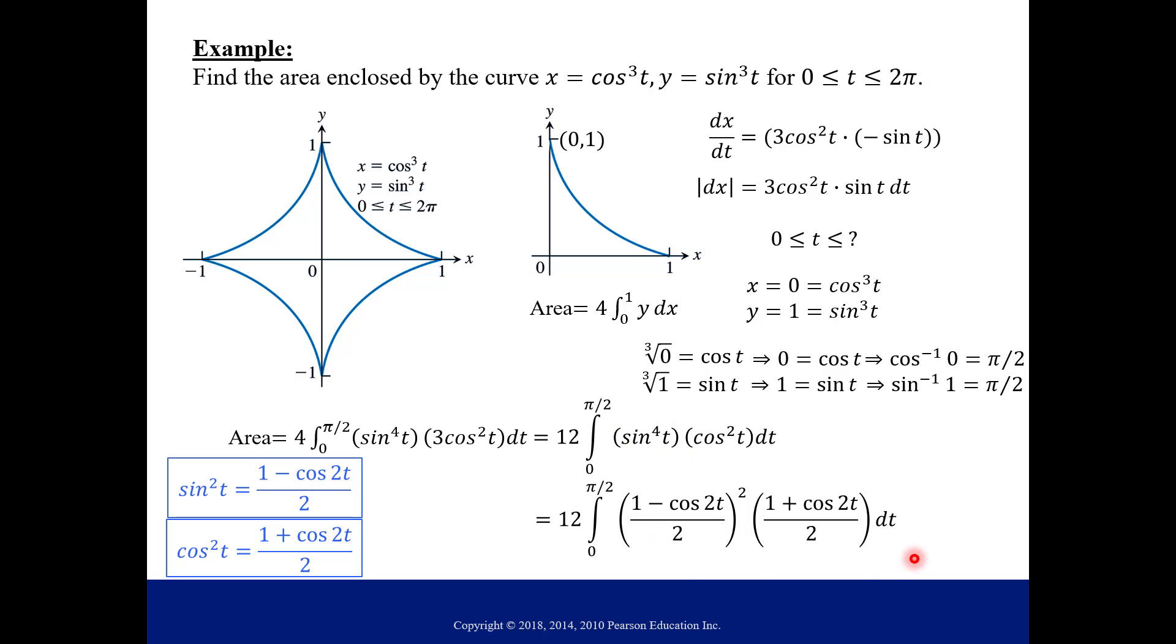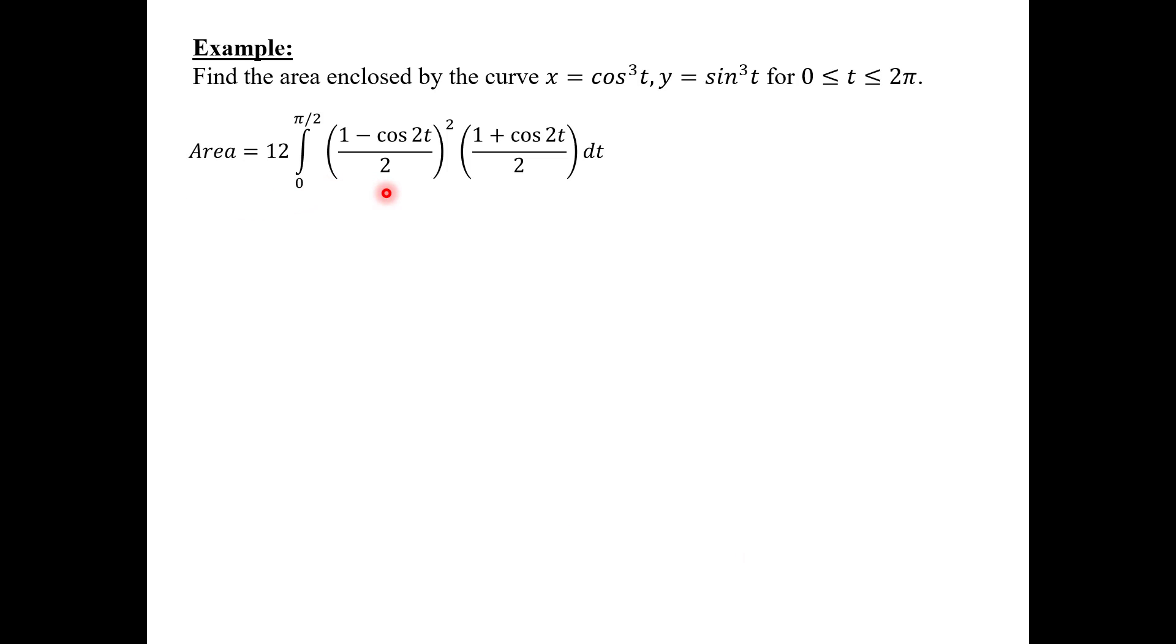We're going to pick up from here and start simplifying and then eventually integrating. First let's expand this out. After factoring out that denominator and then foiling a little bit, we end up with this as our integrand. Some of the terms that are going to be a little bit of work are the cosine squared and then the cosine cubed terms.